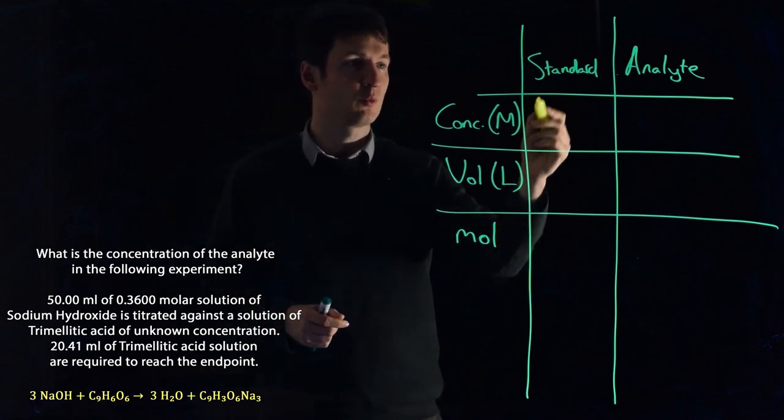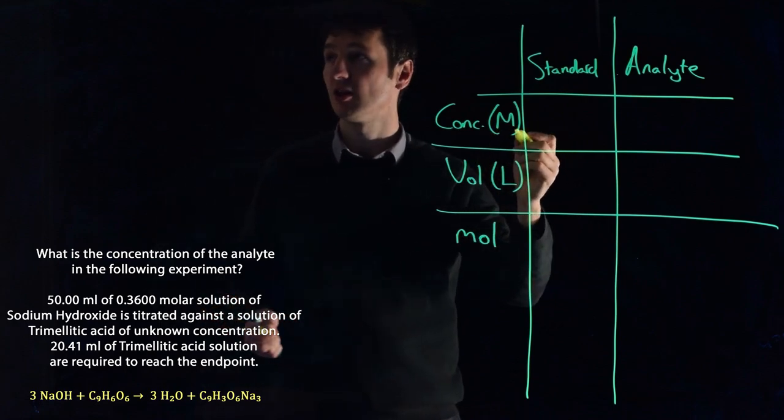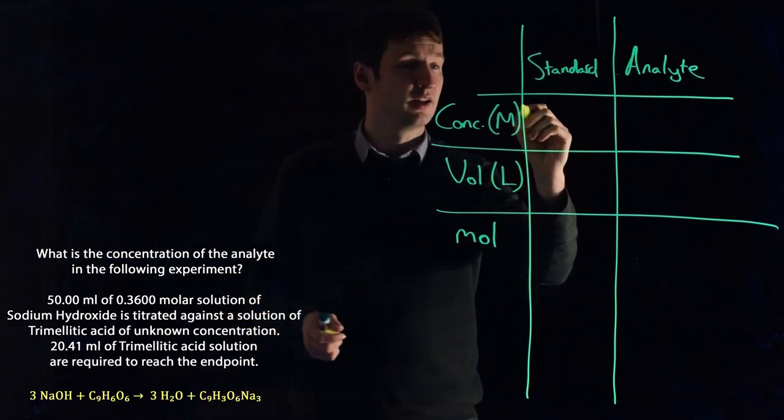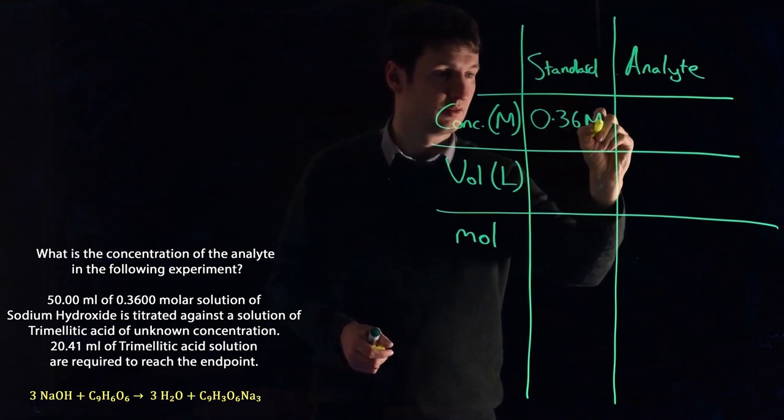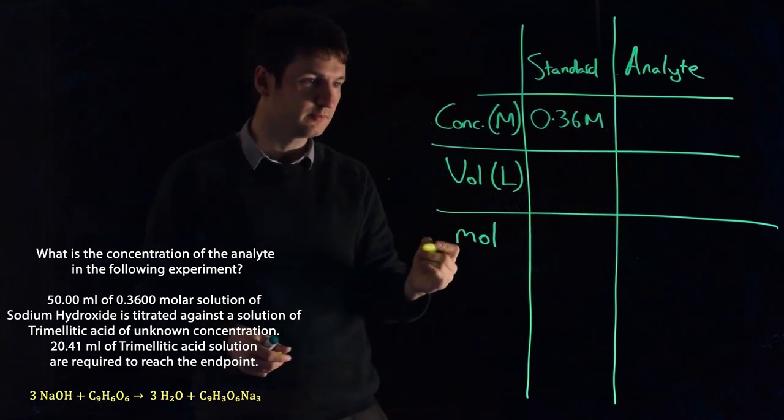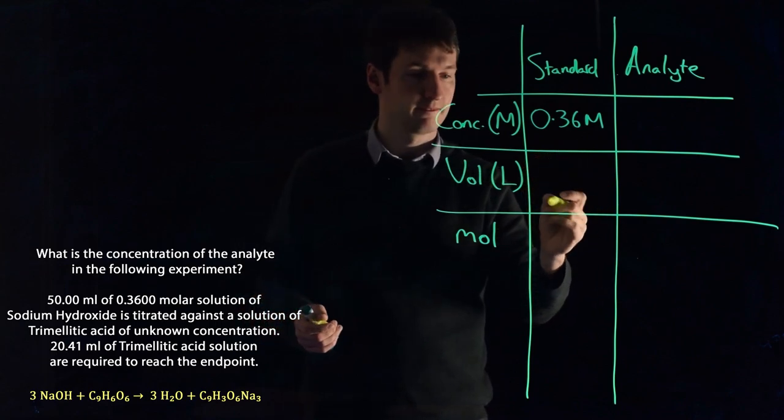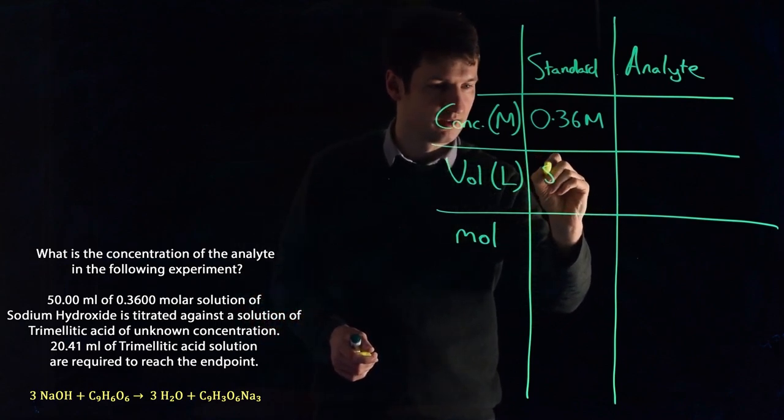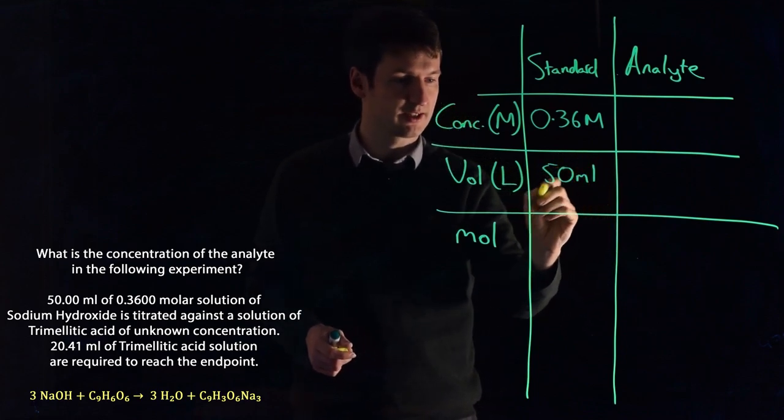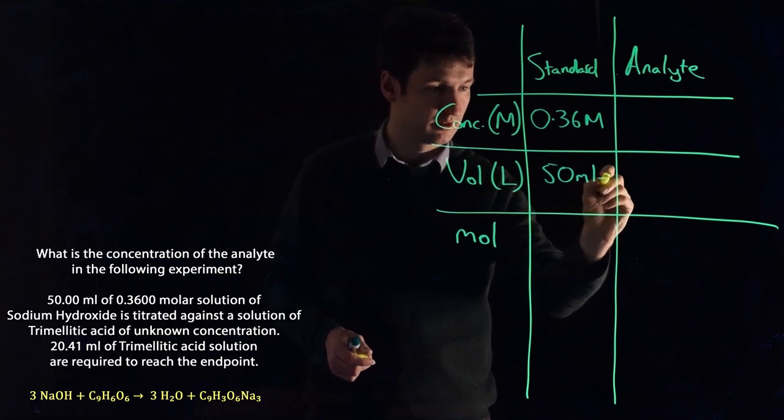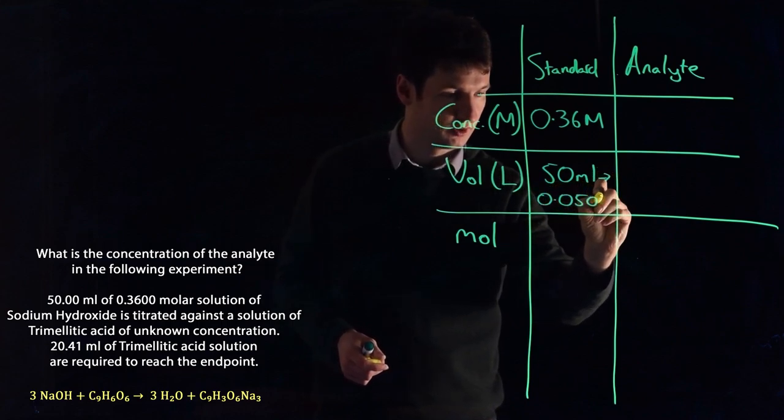So what do we know? Well, we know our standard is sodium hydroxide, because we're given the concentration of that. And we're told the concentration is 0.36 moles per liter. And we're told that we used 50 milliliters of that. So we want to convert our milliliters into liters. That will be 0.050 liters.